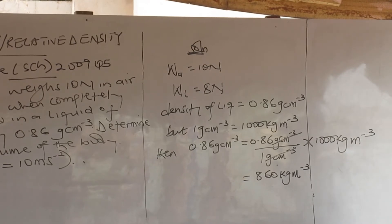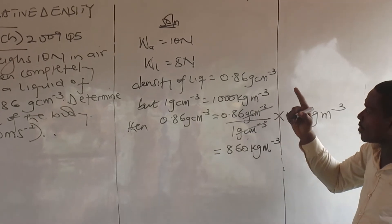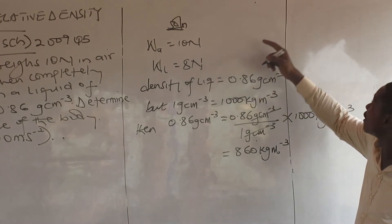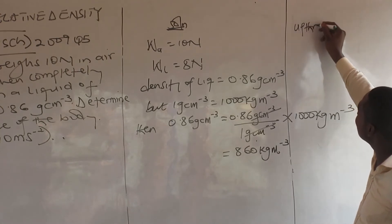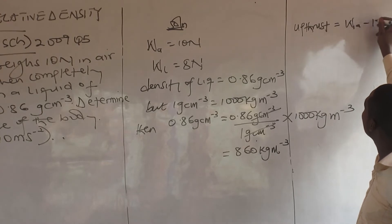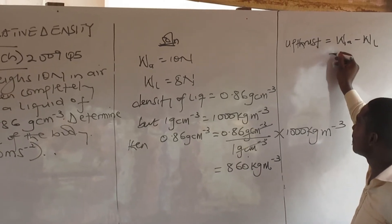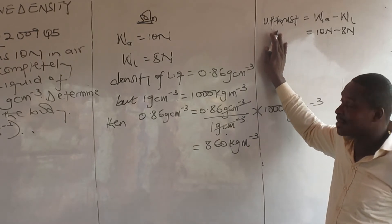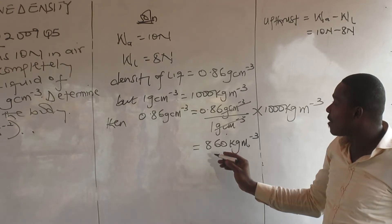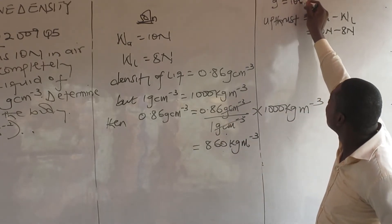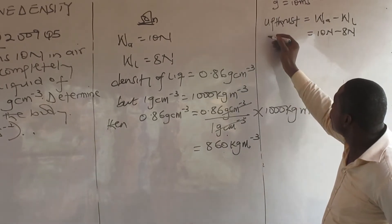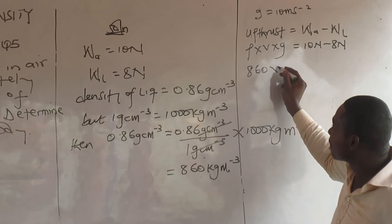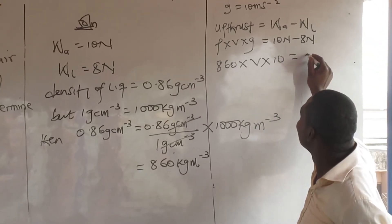Now determine the volume. I can see weight in air (WA) and weight in liquid (WL), and loss in weight equals upthrust. So: upthrust equals WA minus WL, which is 10 minus 8 equals 2 newtons. The formula is upthrust equals density times volume times gravity. I have density 860, gravity 10, and volume V is my unknown target. So: 860 times V times 10 equals 2, which gives 8600V equals 2.